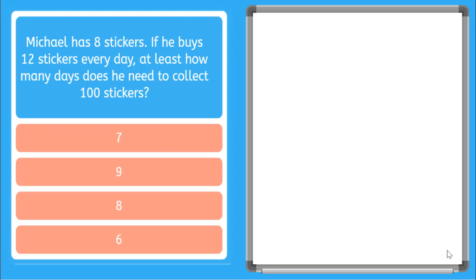So we need to write a linear equation with an inequality sign. We know Michael has 8 stickers, so we can write 8. And we know the rate if he buys 12 stickers every day. So our rate is 12, and he buys one every day. So we can say times the number of days, D.